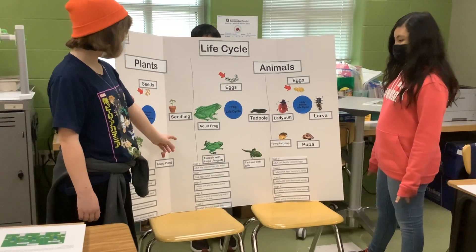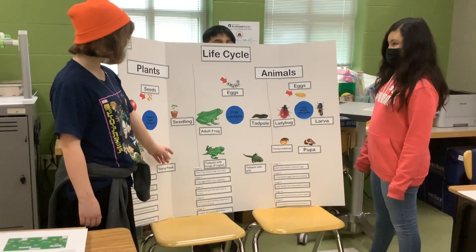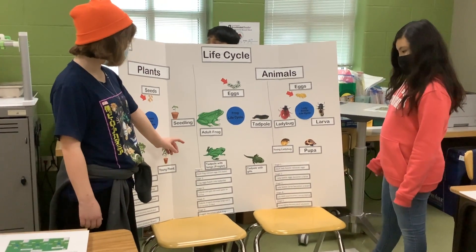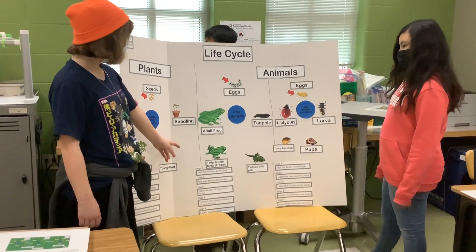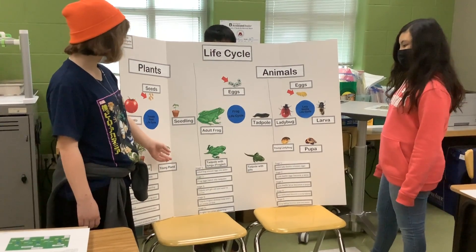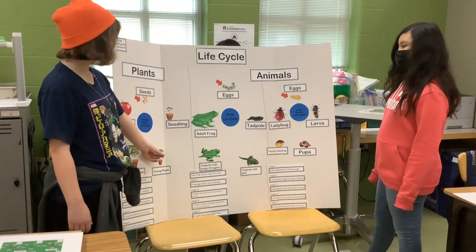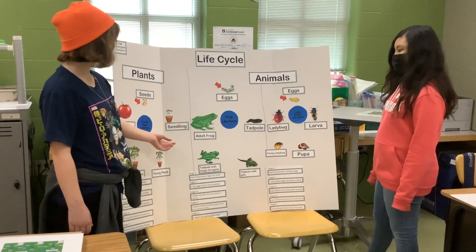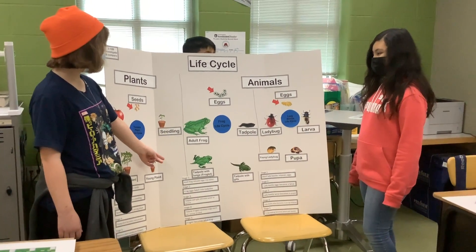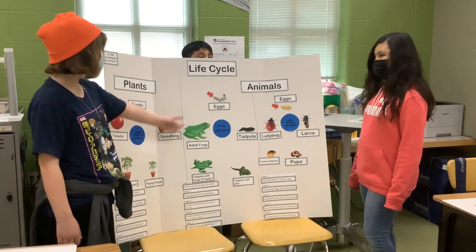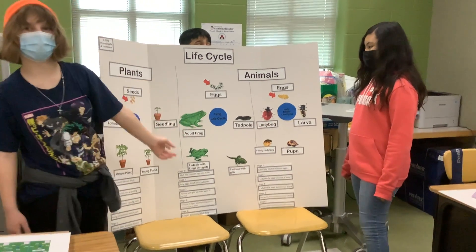The tadpole with lungs loses its gills, and the tail shortens, and it grows more legs. But instead of calling it a tadpole with lungs, you could also call it a froglet. And then the froglet, when it grows, it turns into an adult frog. And then the adult frog can lay more eggs and reproduce and start the cycle again.